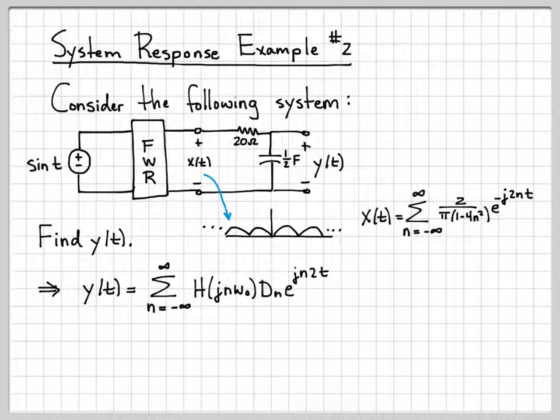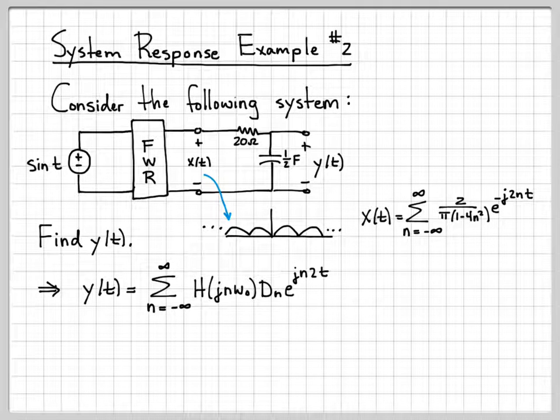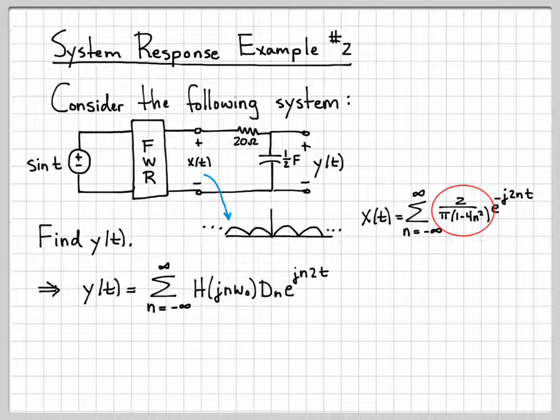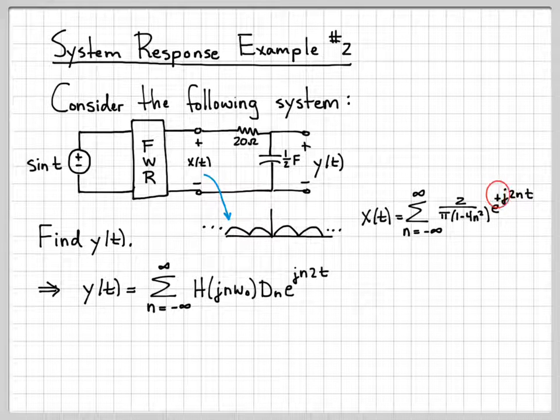They come through just as they came in. If e^(st) goes in, e^(st) comes out. The only thing that happens is that they get multiplied by a complex number. And I just noted I had a little error there. That should have been a plus there.